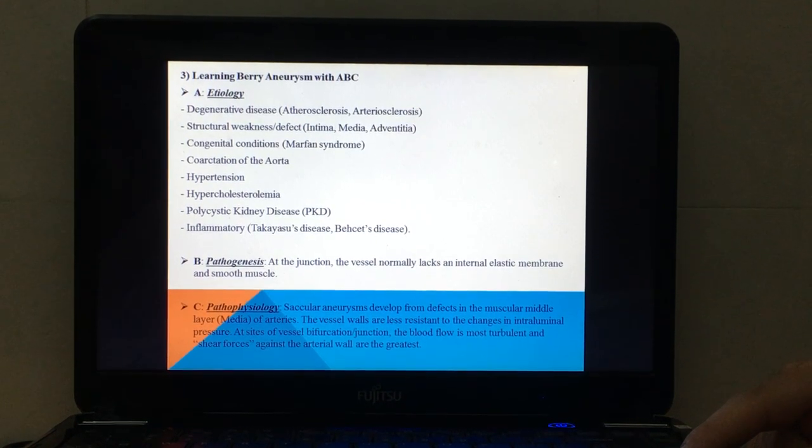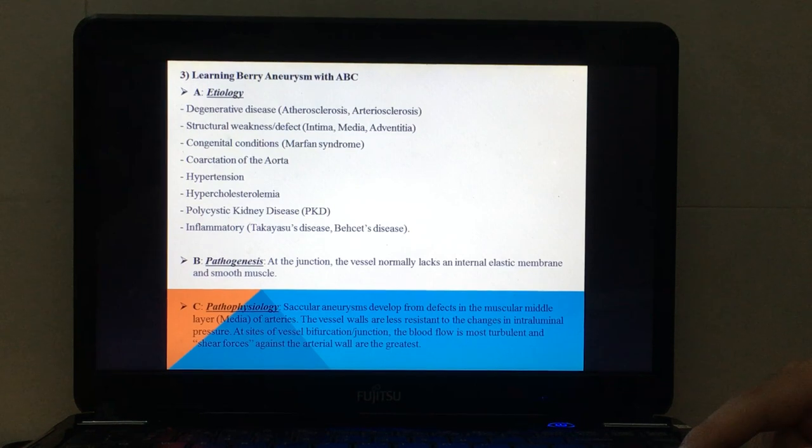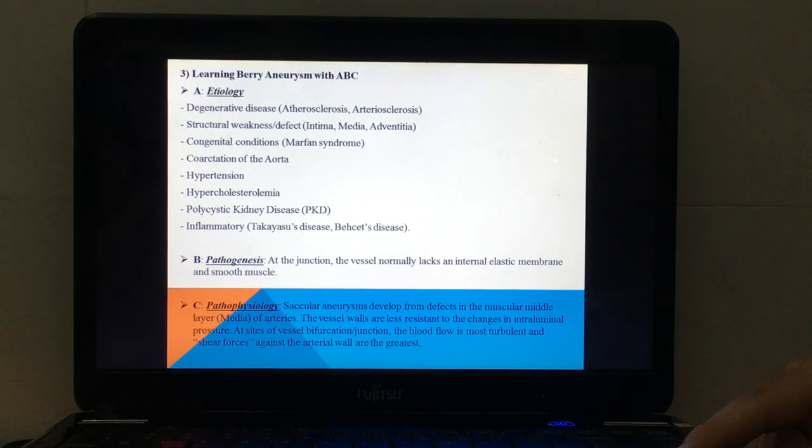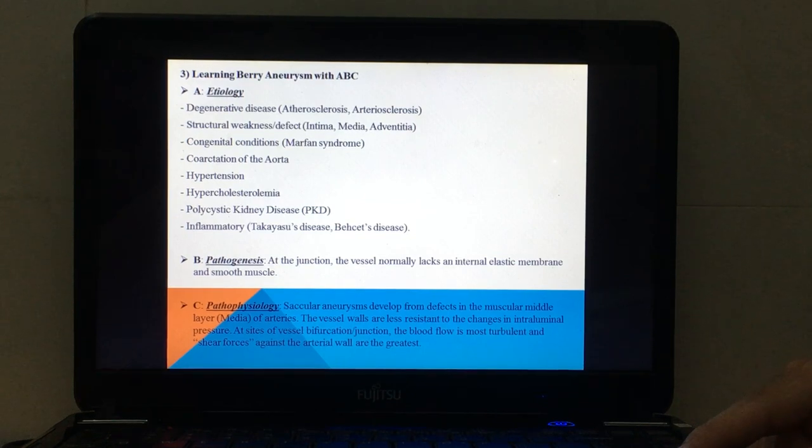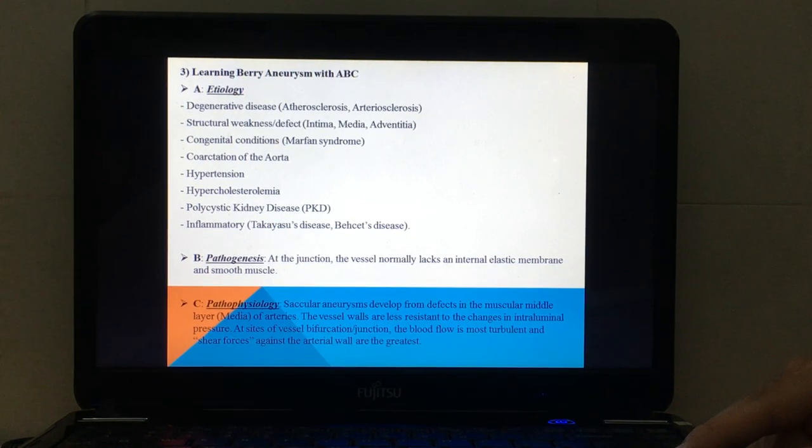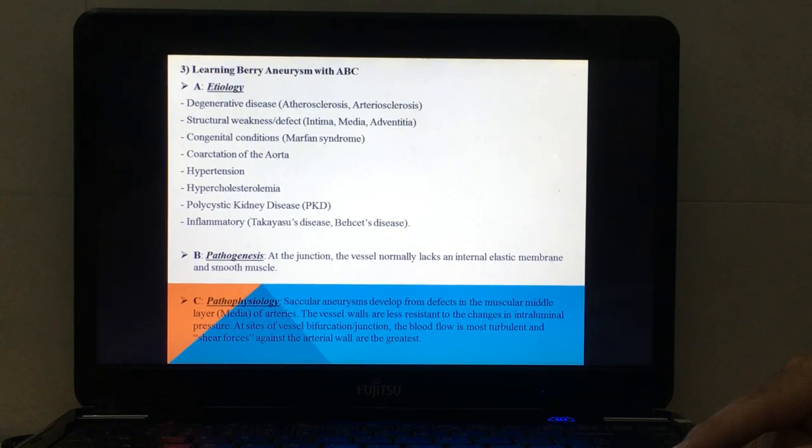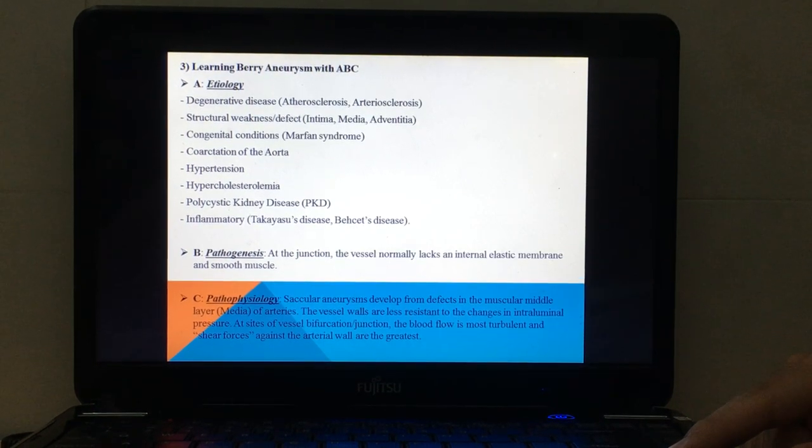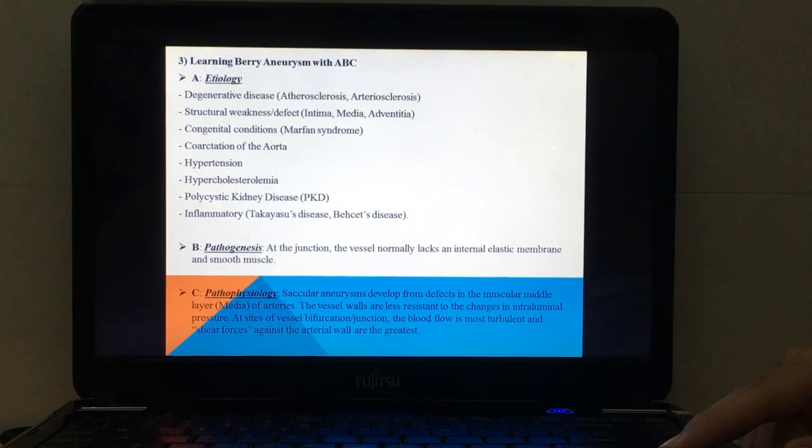A is etiology, B is pathogenesis. In other diseases we use pathogen, but in berry aneurysm we use pathogenesis. And C is pathophysiology. So, etiology: there are several etiologies like degenerative disease, atherosclerosis, arteriosclerosis...